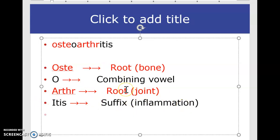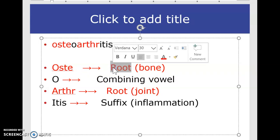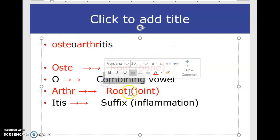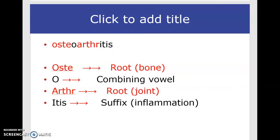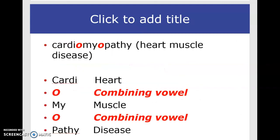Don't get confused between the word root and everything else. Remember, these are the actual body parts — we call them a root in medical terminology. We have the combining vowel, a second root, and a suffix. There is no prefix in osteoarthritis. Another similar example is cardiomyopathy.